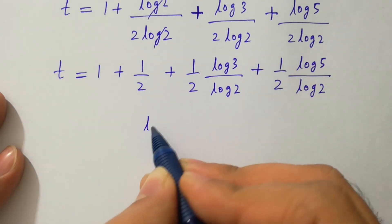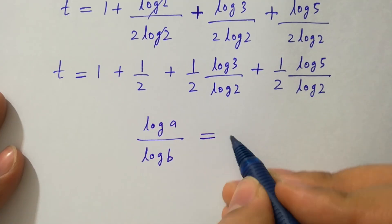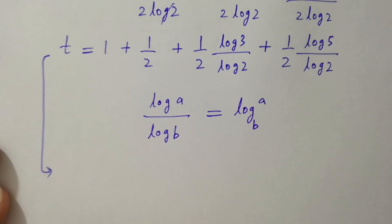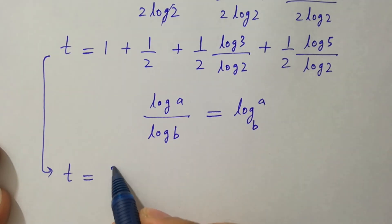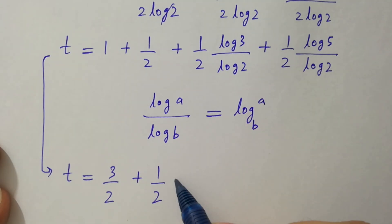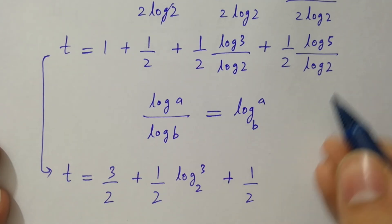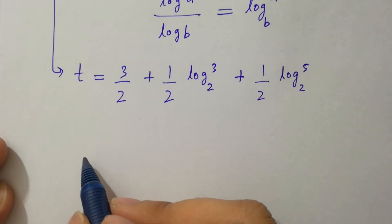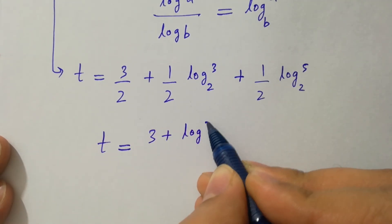As we know, log a over log b equals log a to the base b. So t equals 1 plus one half plus log 3 to the base 2 over 2 plus log 5 to the base 2 over 2, which gives t equal to 3 over 2 plus log 3 to the base 2 over 2 plus log 5 to the base 2 over 2.